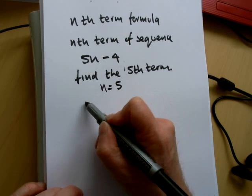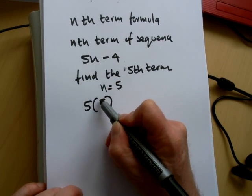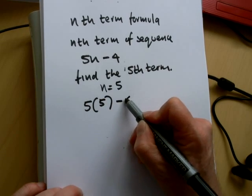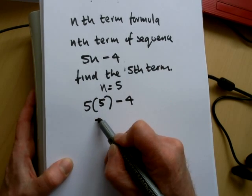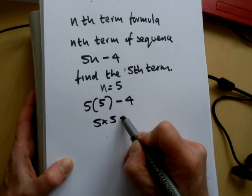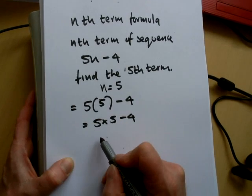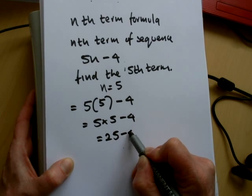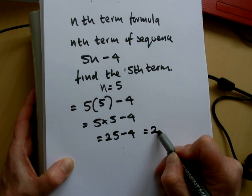So we substitute n equals 5 into the formula. n is replaced with 5 — 5 fives, subtract 4. That will equal 25 minus 4, which equals 21.